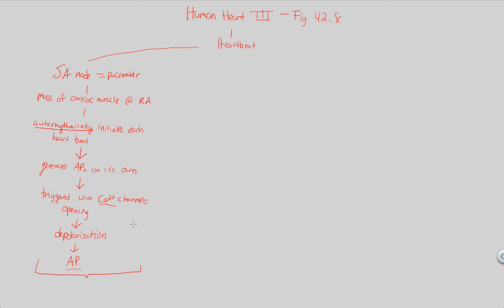Before we get into the next steps of the heartbeat, it's worth highlighting that this pacemaker — the SA node — can actually be replaced by what many people have heard of: an artificial pacemaker. Artificial pacemakers are capable of doing the same function as the SA node, and that's why they are placed exactly where the SA node would be. If the SA node is not functioning correctly, an artificial pacemaker is put there and does exactly the same job.